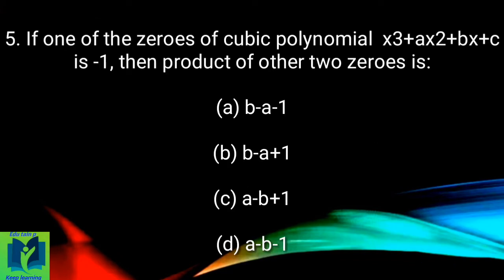If one of the zeros of cubic polynomial x³ + ax² + bx + c is -1, then the product of the other two zeros is: (a) b - a - 1, (b) b - a + 1, (c) a - b + 1, (d) a - b - 1.